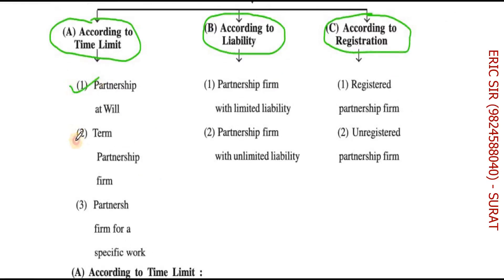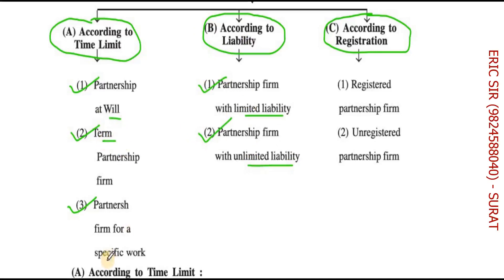According to time limit, there are three types: partnership at will, term partnership, and partnership for a specific work. According to liability, we have a partnership firm with limited liability and a partnership firm with unlimited liability. According to registration, we have a registered partnership firm and an unregistered partnership firm.